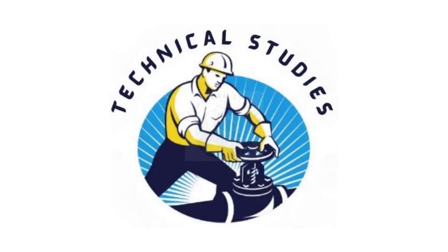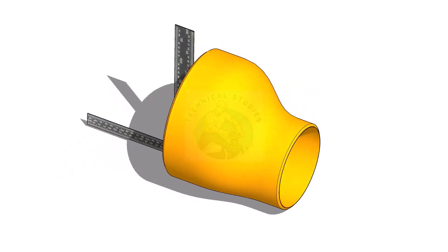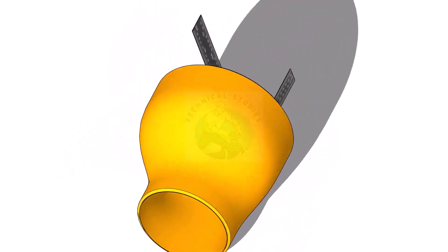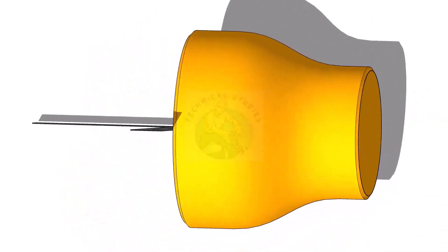An eccentric reducer is a fitting used in piping systems between two pipes of different diameters. The same fitting can be used in reverse as an eccentric increaser or expander.